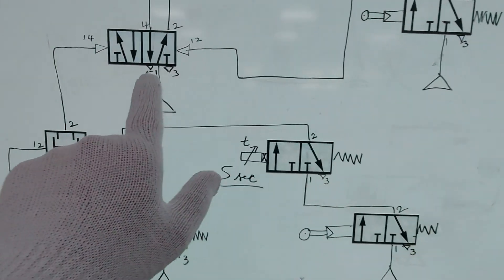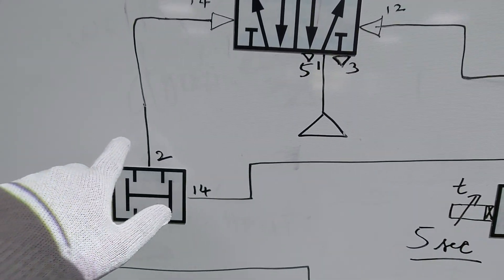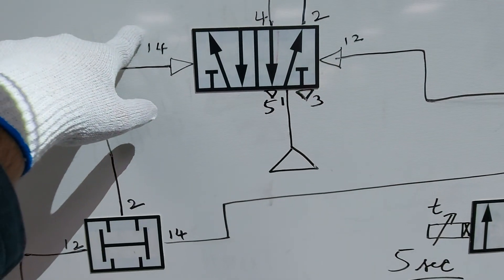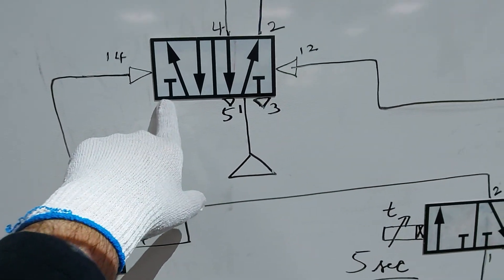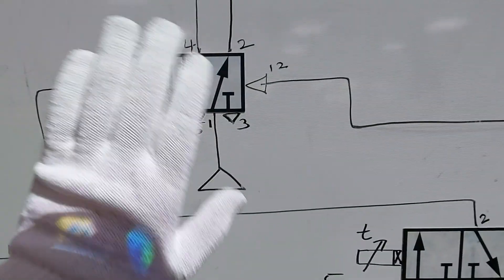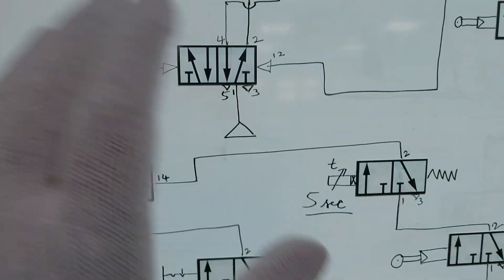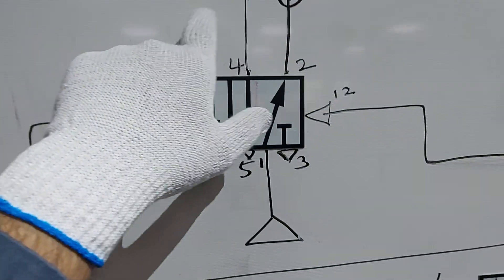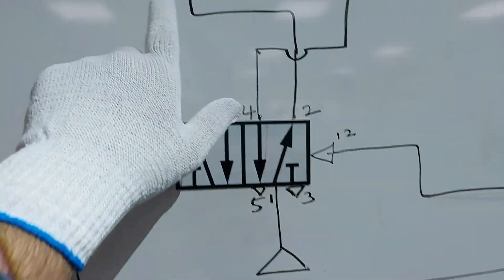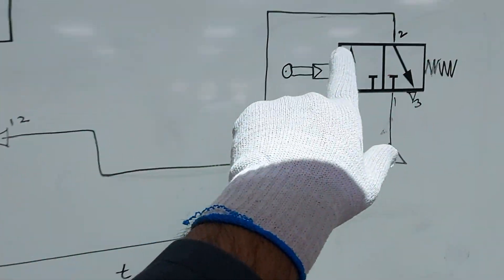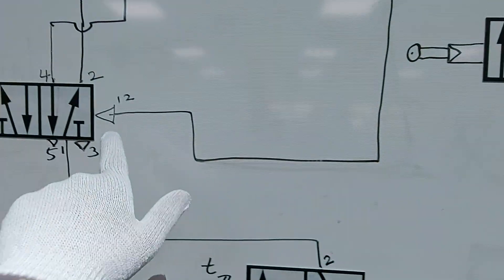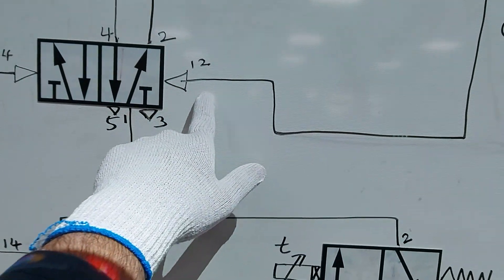We need to connect as per the port numbers. For example, port 2 from the dual pressure valve goes to ports 1, 4, and 14 of the 5x2 wave double pilot valve. Port 4 of the double pilot goes to one side of the cylinder, and port 2 goes to the other side. Port 12 is connected here, and the output port 2 of the roller is connected to port 12 of the double pilot.